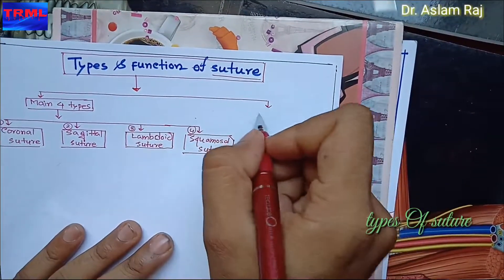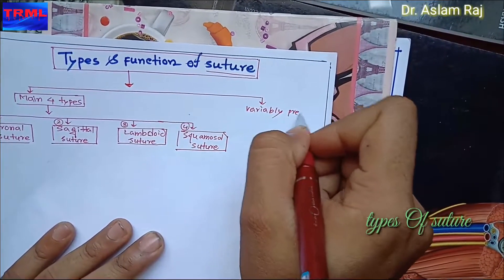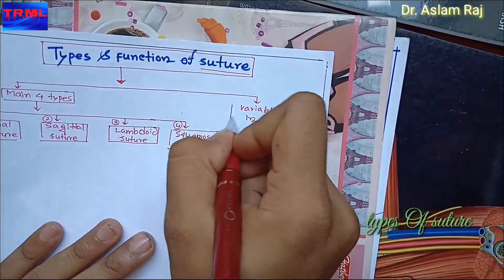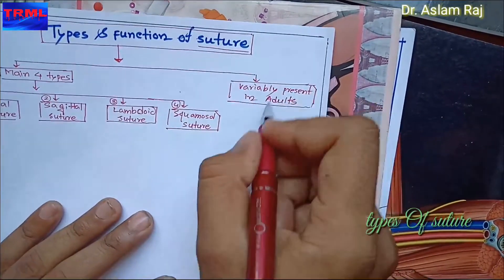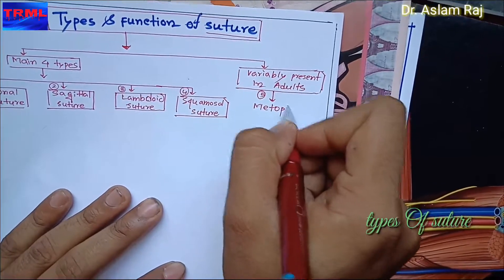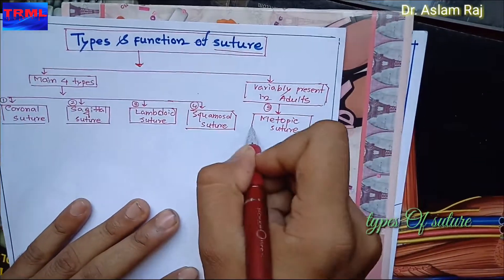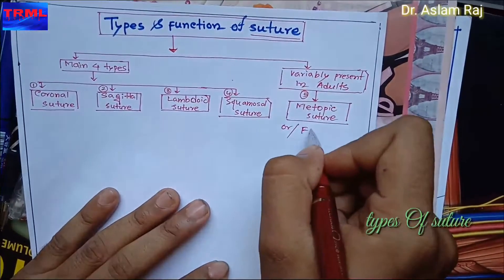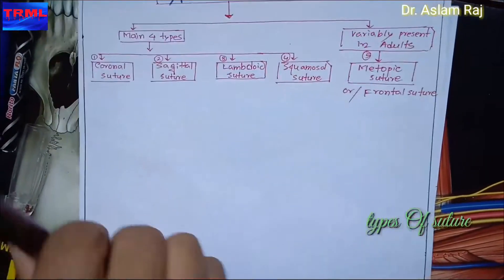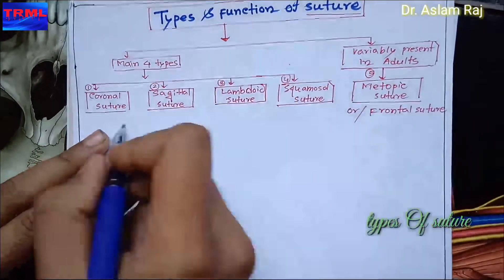Another type of suture is variably present, mainly in adults. The name of this suture is metopic suture — number five. It is also called the frontal suture.